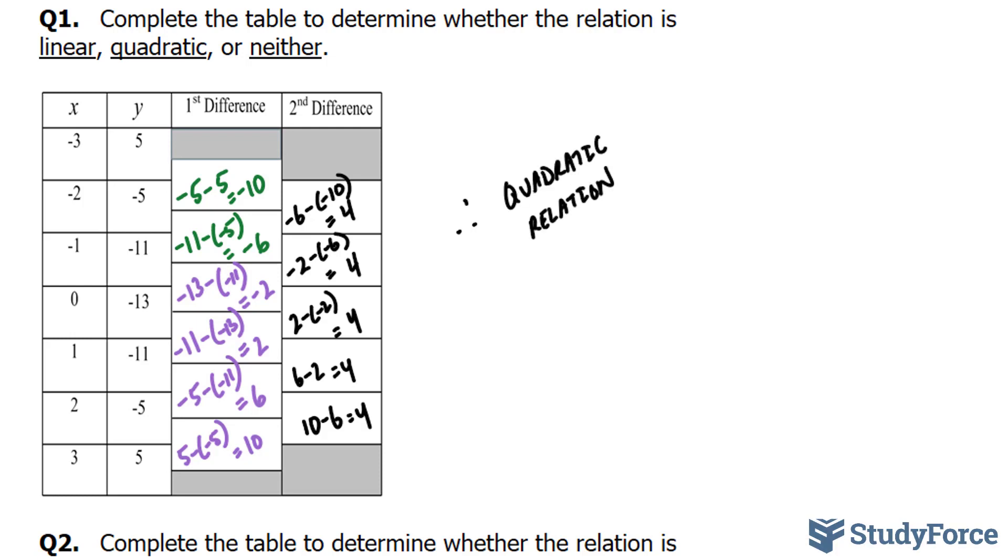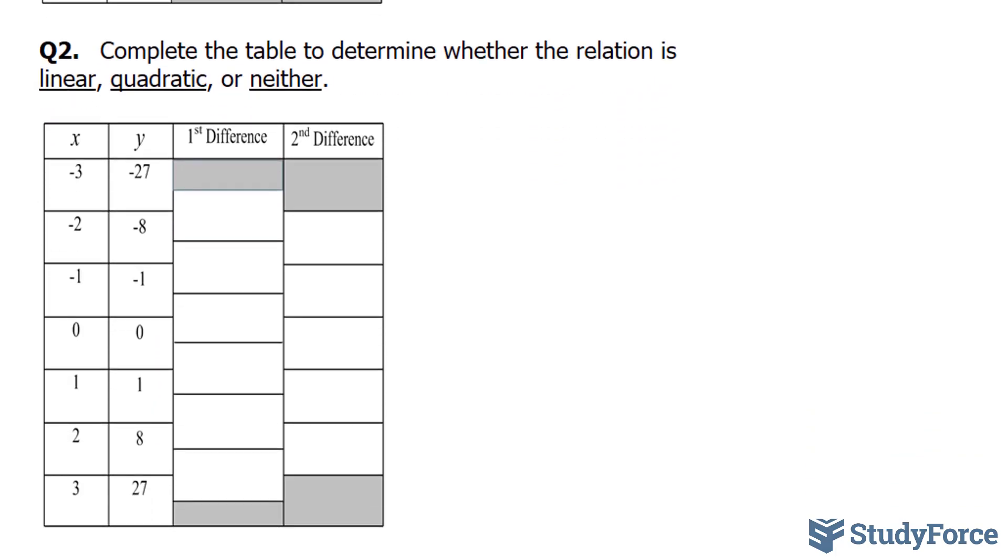Let's move on to question 2. Once again, complete the table to determine whether the relation is linear, quadratic, or neither. We'll start off with the first differences. And notice that the x's are consistently going up by 1, so we can perform the first differences.